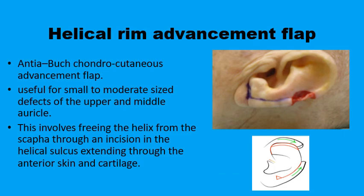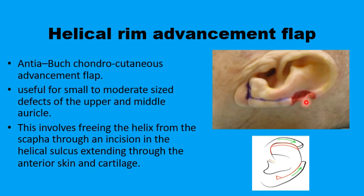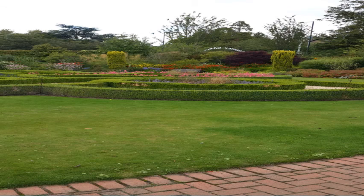One final example for the application of bipedicle advancement flaps is the helix. When there is a lesion involving the helix that is too large to be closed by advancing a single pedicle, pedicles from both sides of the lesion are used. This entails an incision just in the helical sulcus to free the helix to move upwards in one direction and downwards in the other to meet in the middle, causing minimum deformity and distortion of the auricle. We have covered applications of bipedicle advancement flaps in the forehead, the lips, the eyelids, the tip of the nose, and the helix of the auricle. Salam alaikum.